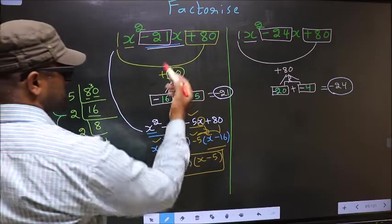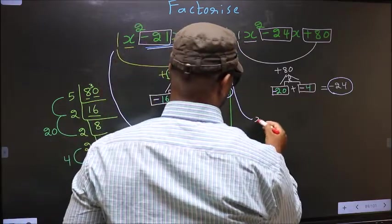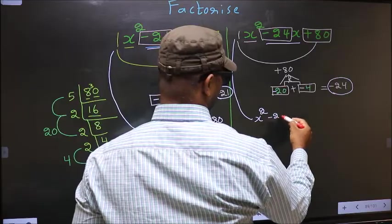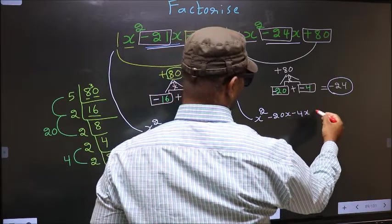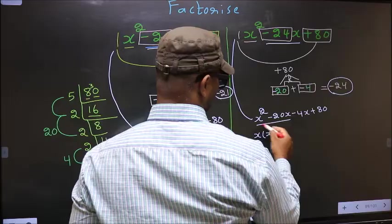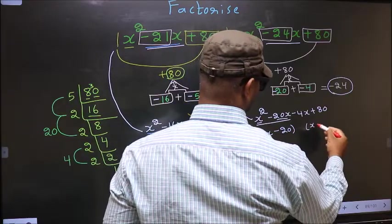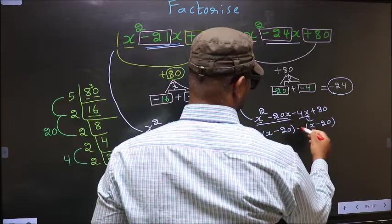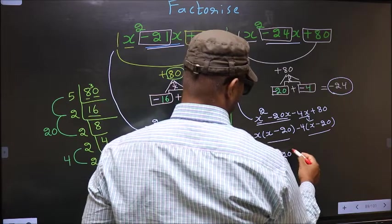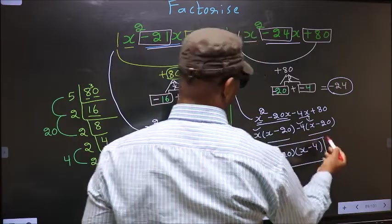For the second expression, change minus 24x to minus 20x minus 4x plus 80. From the first two terms, take out x common: x minus 20. Then outside you get minus 4. Taking x minus 20 common, you get x minus 20 times x minus 4. This is the answer for this one.